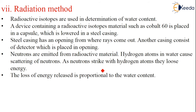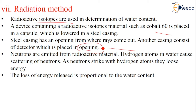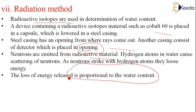Coming to the next method, that is the radiation method. Radioactive isotopes are used in this method to determine the water content. A device containing a radioactive isotope such as cobalt-60 is placed in the form of a fuel rod which is lowered in a steel casing. The steel casing has an opening from where the rays can come out, and another casing consists of a detector placed in the opening. Neutrons are emitted from the radioactive materials. Hydrogen atoms in water cause the scattering of neutrons — these neutrons strike hydrogen atoms and lose energy. The loss of energy is proportional to the water content.